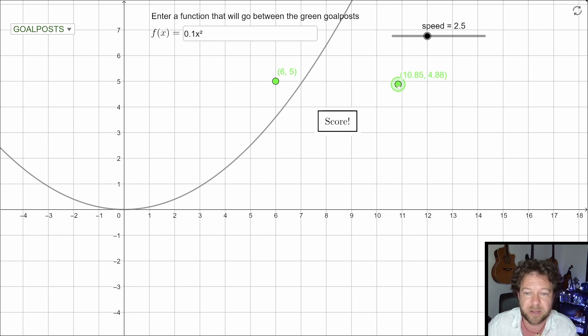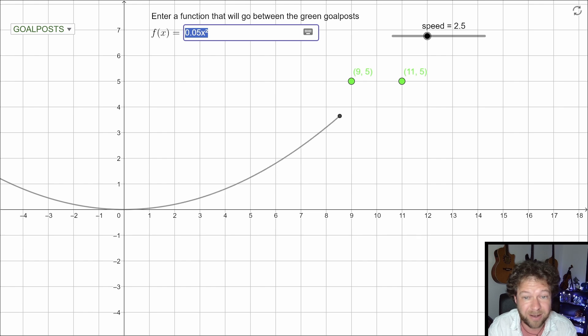So let's say I move the points over here and I want a quadratic that goes through there. Now it's clear that I need to adjust this coefficient again if I've got the same rules. Let's go 0.05 and the tension is building. I have scored a goal. I'm relieved about that.